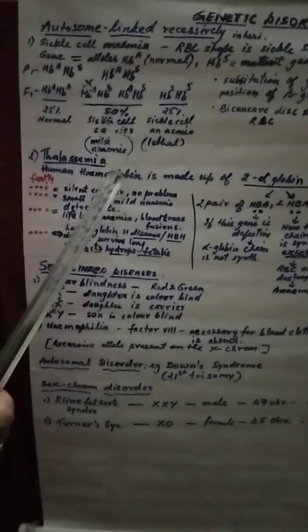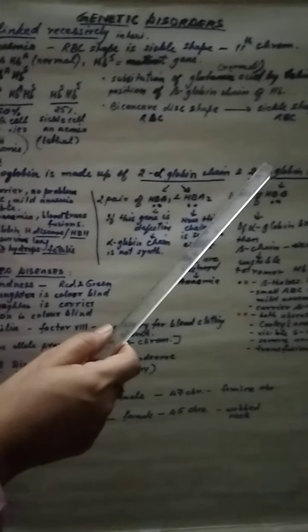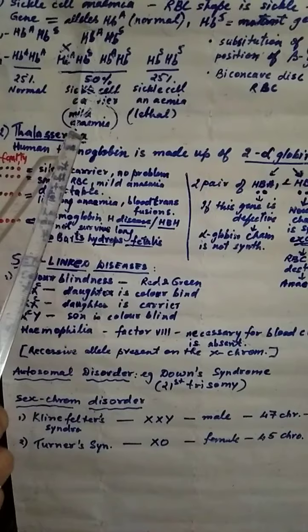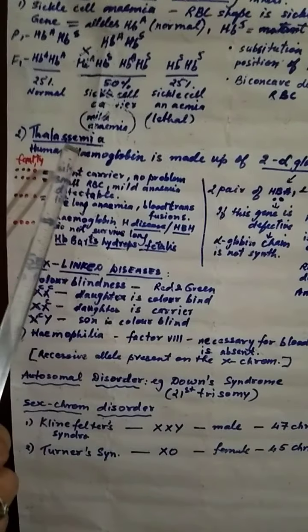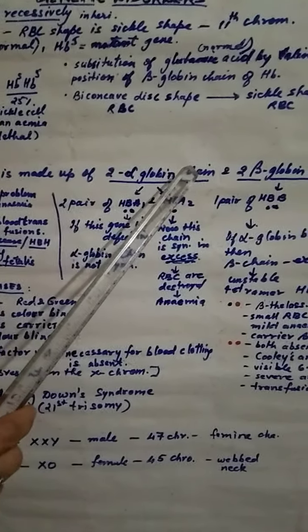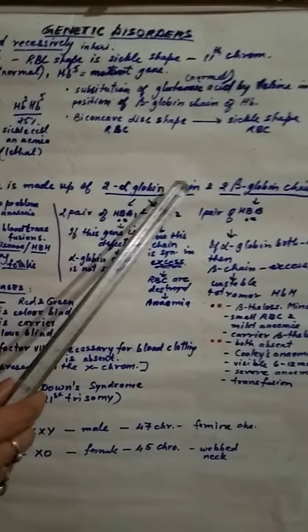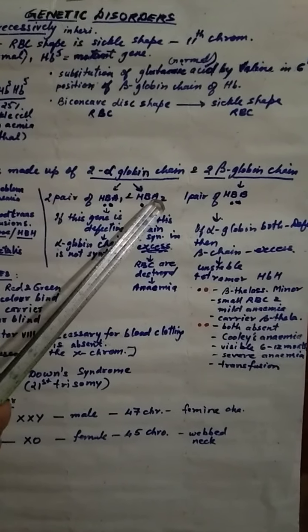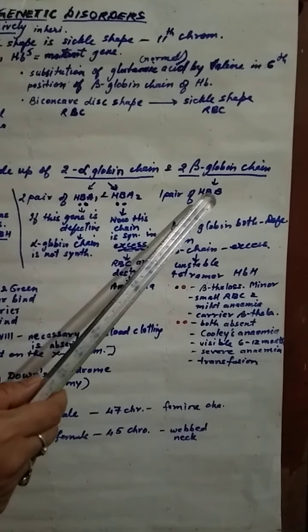Human hemoglobin is made up of 2 alpha-globin chain and 2 beta-globin chain. We were discussing about thalassemia. In thalassemia usually what happens, it is a blood disorder. We know that human hemoglobin is made up of 2 alpha-globin chain and 2 beta-globin chain. Do remember that 2 alpha-globin chain are controlled by 2 genes HbA1 and HbA2. And 2 beta-globin chain is controlled by 1 pair of gene HbB.